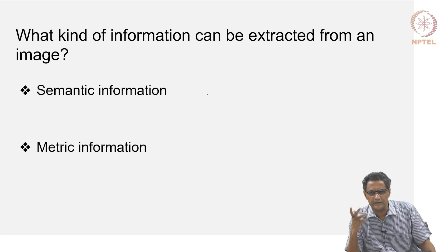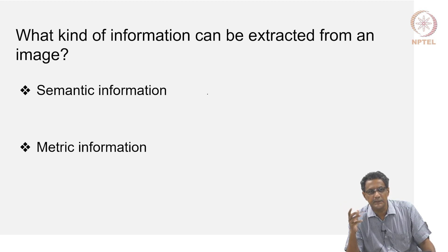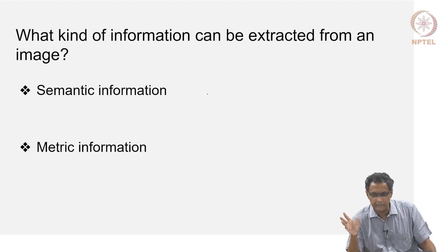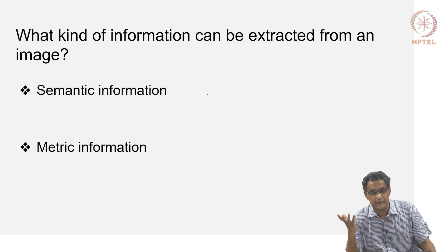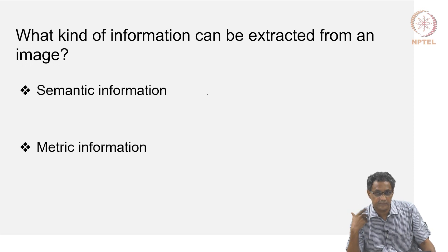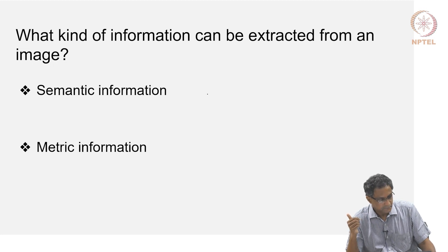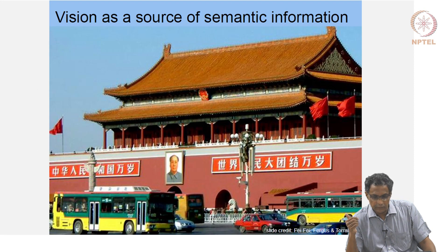What kind of information can one extract from an image? You can classify it in different ways, but simply put: one is metric and another is semantic. Semantics means something associated with words and meaning. Metric is like a measurement — metric information. So broadly, when you see an image and give it to an algorithm, the algorithm can gather semantic information or metric information, or sometimes both.